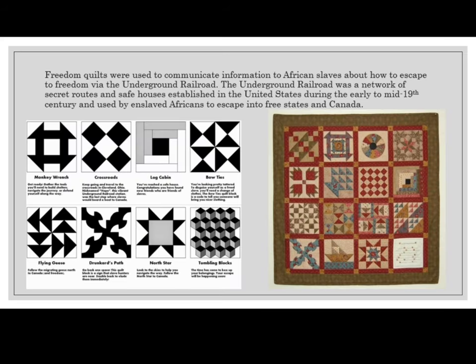Freedom quilts were used to communicate information to African slaves about how to escape to freedom via the Underground Railroad. The Underground Railroad was a network of secret routes and safe houses established in the United States during the early to mid-19th century and used by enslaved Africans to escape into free states and Canada.